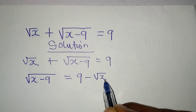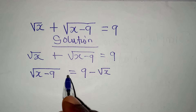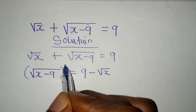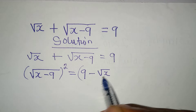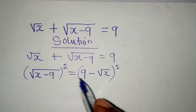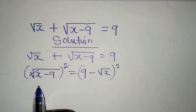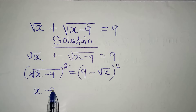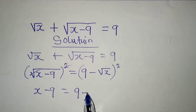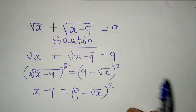The next thing is to remove the square root by squaring both sides. The whole of each side will be squared. Square root and square cancel, so we have x minus 9 equal to 9 minus square root of x, all squared.